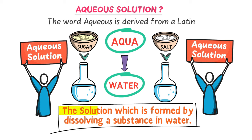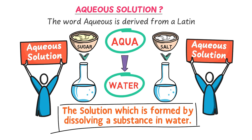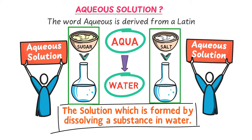The solution which is formed by dissolving a substance in water is called an aqueous solution. In aqueous solution, water is usually present in large amount as a solvent. Remember that when we dissolve any substance in water, we get an aqueous solution.